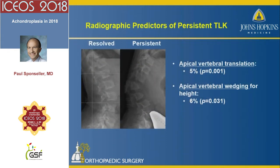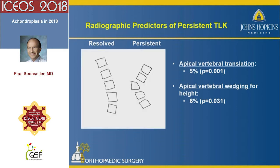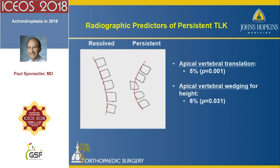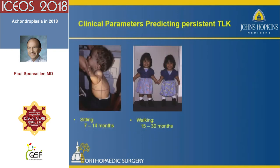The radiographic predictors of persistent kyphosis had to do with apical wedging and apical translation of the vertebra. A line drawing shows the measurement of thoracolumbar translation and wedging. If they have either of those features, there's a good chance they will not grow out of it. Developmental delay can also predict persistence — if children are late sitting beyond 14 months or late walking beyond 30 months, they have a much greater chance of persistent thoracolumbar kyphosis.